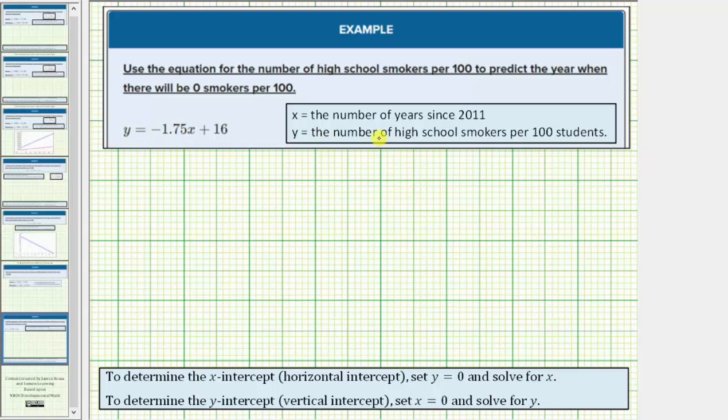So for the given equation, x equals the number of years since 2011, and y equals the number of high school smokers per 100 students.